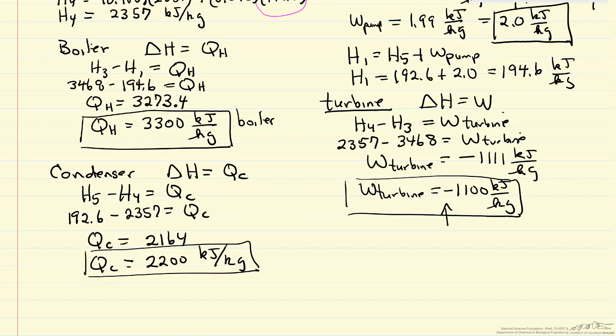ΔH = H5 - H4 = Q_C. Substituting the numbers gives Q_C = -2200 kJ/kg. The negative sign is correct because we're removing energy from the material exiting the turbine as it enters the condenser.